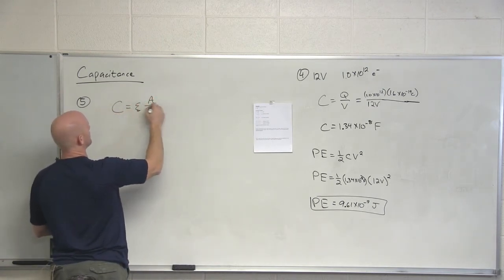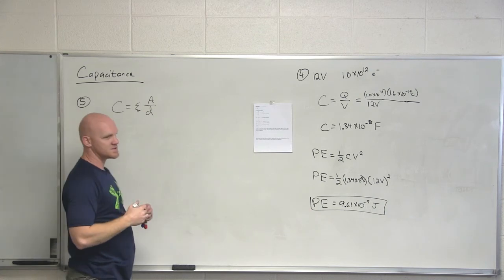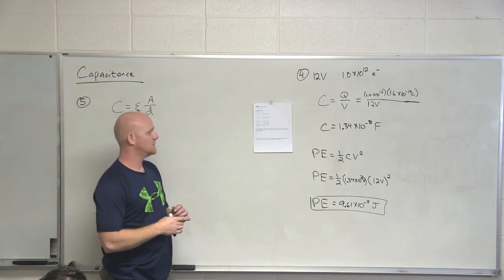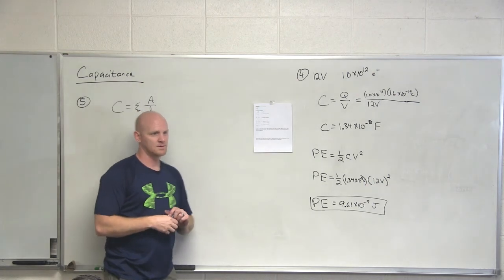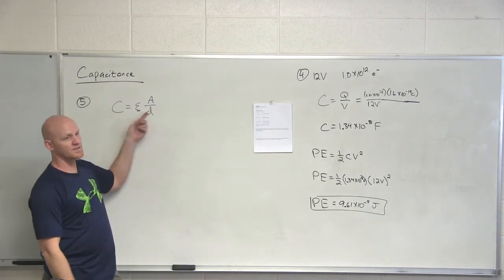So if we recall for a parallel plate capacitor, there's our equation. What did I do to the distance of separation? Let's evaluate that first. I doubled it. What does that do to the capacitance?